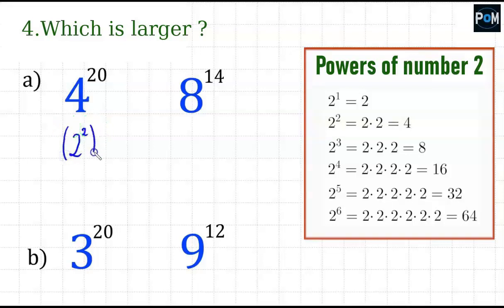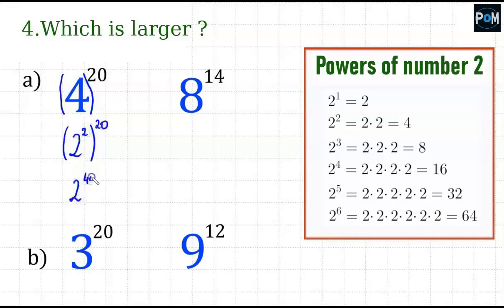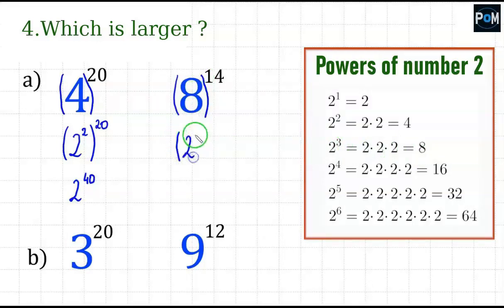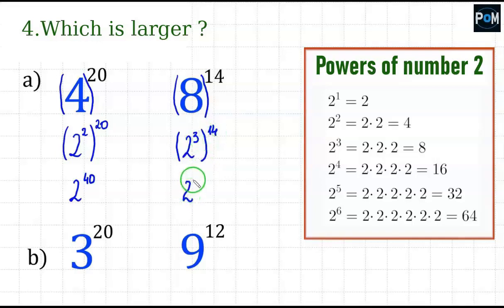So I have 2 to the power of 2 in parentheses, raised to the 20th power — that is the same as 2 to the 40th power. And what about the number 8? Instead of the number 8, I can put 2 to the power of 3. So instead of 8 in the parentheses, I will have 2 to the power of 3, and I rewrite the exponent 14. Now I write down 2 and multiply 3 and 14, which gives me 42.